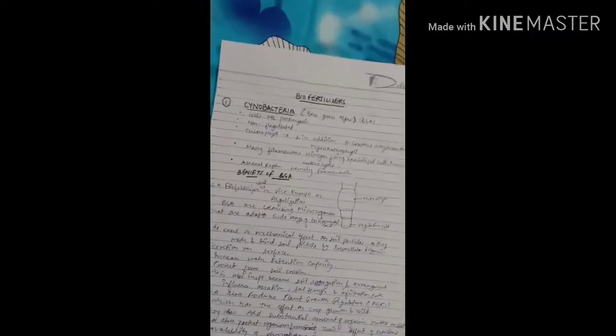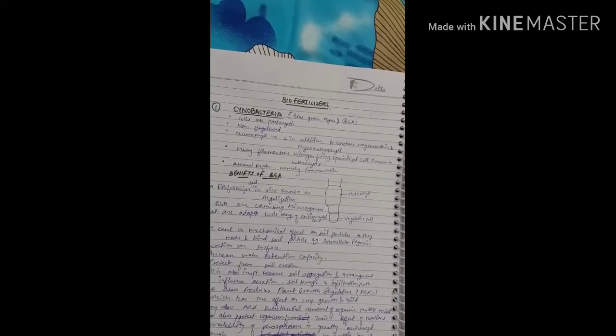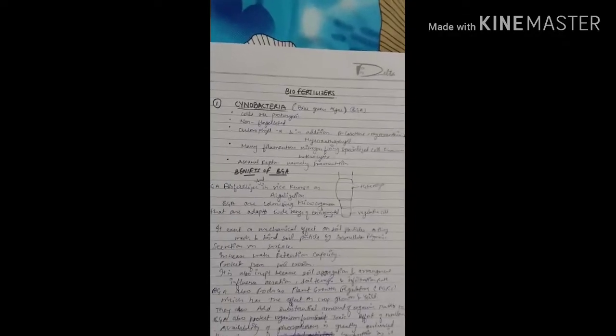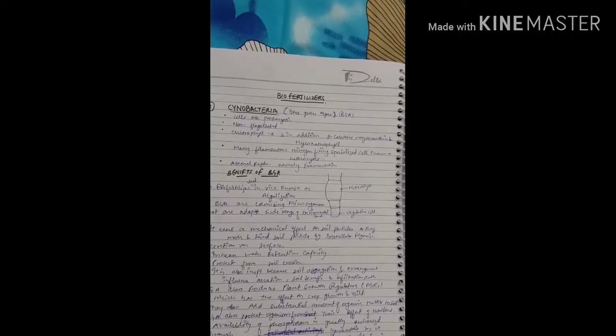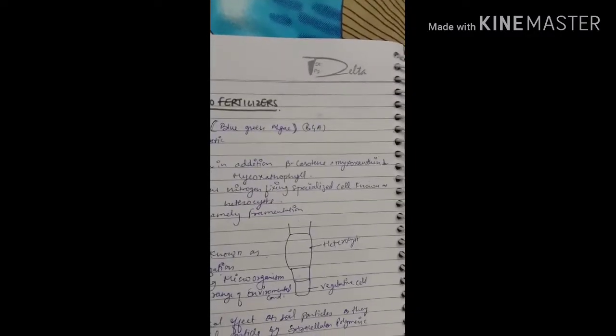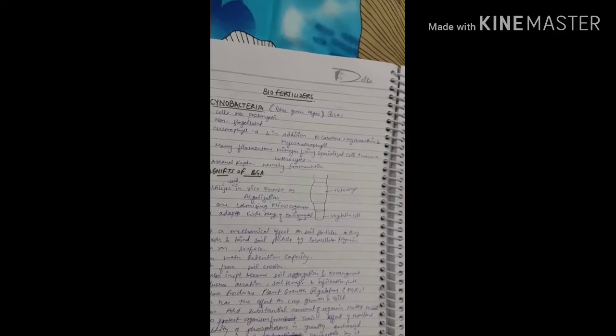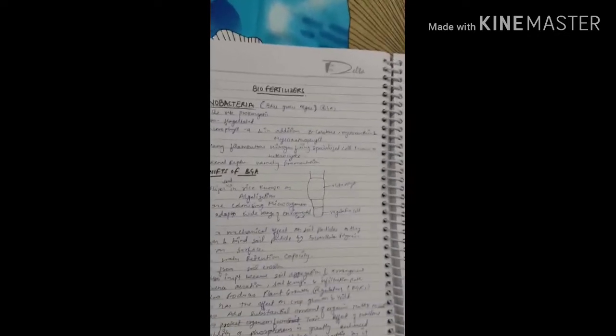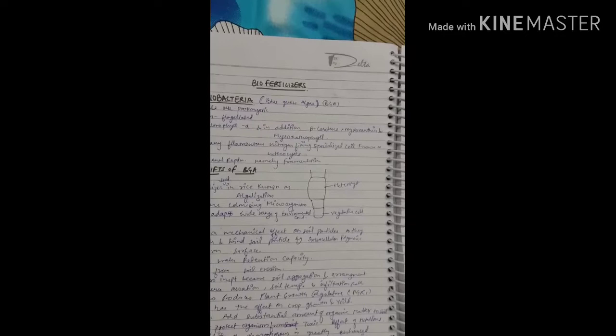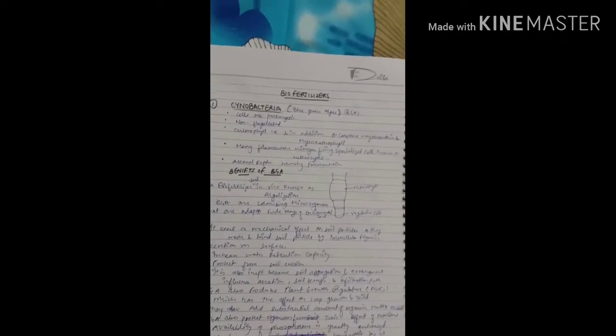First of all, cyanobacteria - cyanobacteria is blue green algae or BGA. Cells are prokaryotic and non-flagellated. Chlorophyll A is present, in addition to beta-carotene, myxoxanthin, and myxoxanthophyll. Many filamentous nitrogen-fixing specialized cells known as heterocyst are present because it is nitrogen fixing. Asexual mode of reproduction is seen here, that is fragmentation.